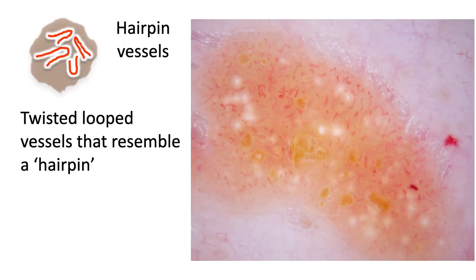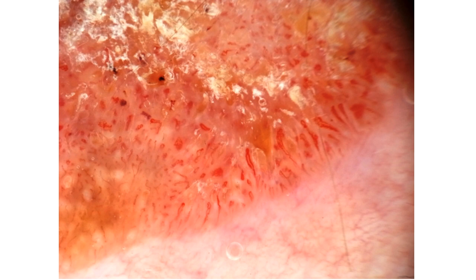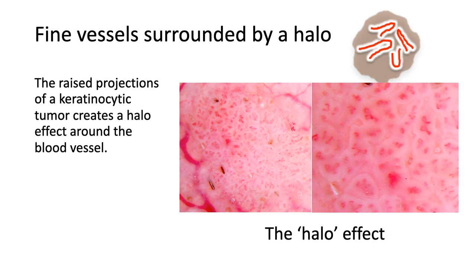The vessels of seborrheic keratosis are characteristic: hairpin vessels, which are twisted loop vessels that resemble a hairpin. In this photo you can also see milia-like cysts, comedone-like openings, and hairpin vessels. This is one of the best examples — the hairpin vessels are very characteristic of seborrheic keratosis. If you look carefully, these fine vessels are surrounded by a white halo, produced by the raised projections of the keratinocytic tumor creating a halo effect around the blood vessels.